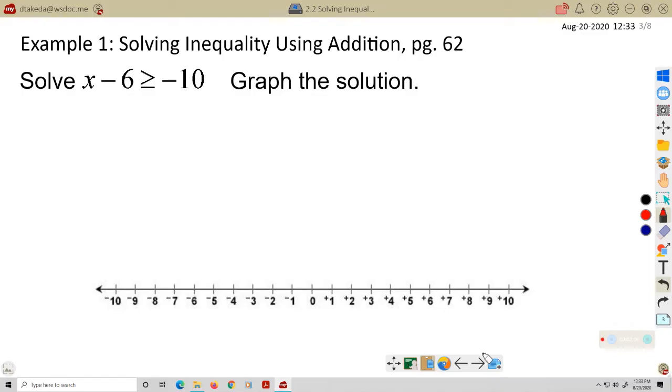X minus 6 is greater than or equal to negative 10, and we want to graph the solution. Well, again, just like with equations, we want the X by itself. So I'm going to add 6 to essentially turn the negative 6 into a plus 0. Negative 6 plus 6 is 0. Whatever I do to the left, I must also do to the right, so I'll add 6 to the right. That leaves me X is greater than or equal to negative 4. That is my solution.